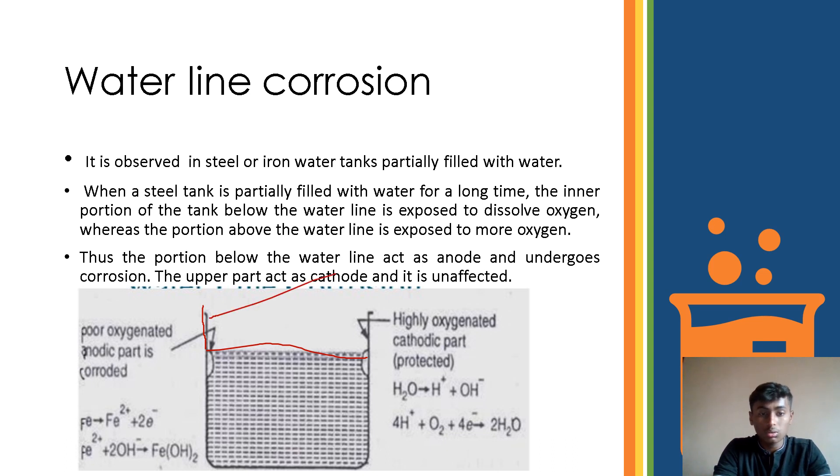Here, this part of the tank is known as the cathode part, and this part is known as the anode part. You may see here bubble type, this is the corroded place which is affected, so the anode part is affected and cathode part is not affected.